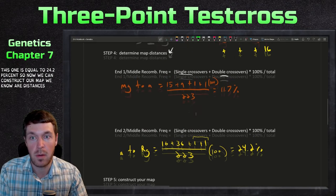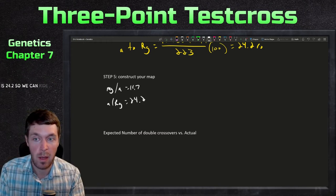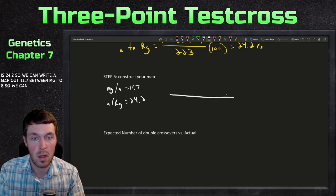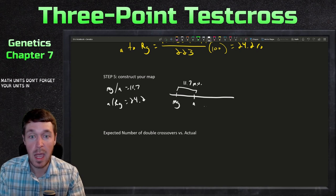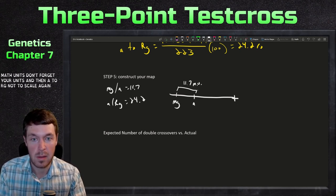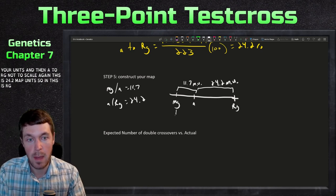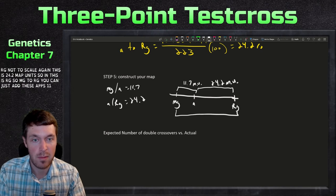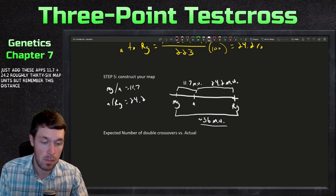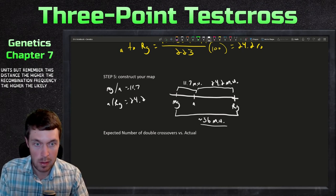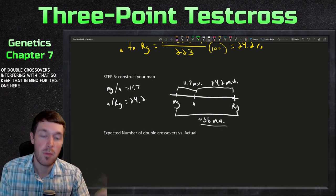Now we can construct our genetic map. mg to a is 11.7 map units and a to rg is 24.2 map units. Drawing the chromosome: mg is first, a is 11.7 map units away, and rg is 24.2 map units further. So mg to rg is roughly 36 map units total. Remember: the higher the recombination frequency, the higher the likelihood of double crossovers interfering.